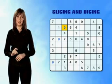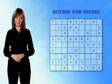Slicing through rows and dicing down columns is the basic technique used to complete every Sudoku puzzle, as it enables us to go through a simple process of elimination to determine where our missing numbers can be placed.